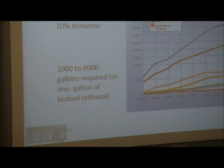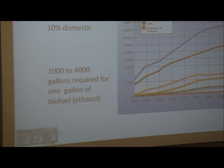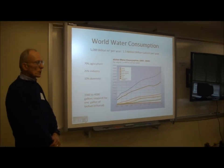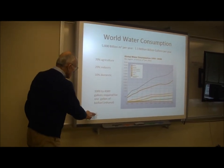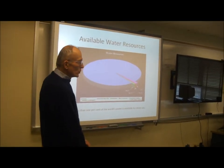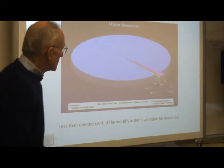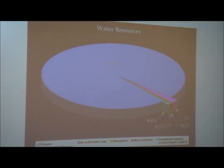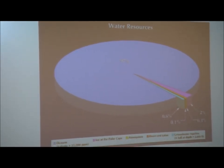Where does that water come from? Essentially all of it comes from two types of sources: surface water — rivers, lakes, reservoirs — and groundwater, or deep aquifers, where it's pumped by wells. The total amount of water useful for human consumption in surface water and aquifers is less than 1%. 97% of the world's water is seawater, and the remainder is in the atmosphere and in the polar ice caps.